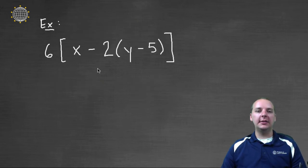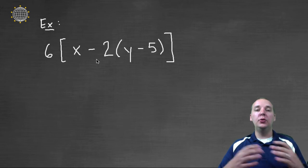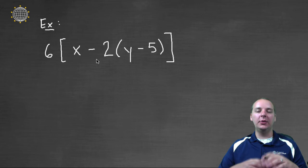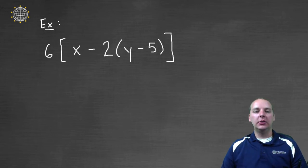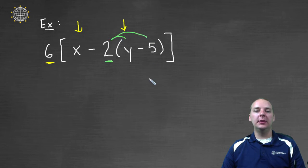Alright, here's our last example. This one's a little bit more challenging. We actually have two different distributive properties that I see, but one is nested inside the other one. So, one that I see is this six times all these things that are being added or subtracted. But then I also see, here on the inside, I've got two times the quantity y minus five. We will also need to distribute this two.